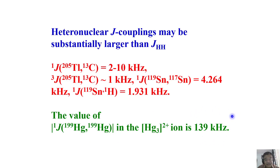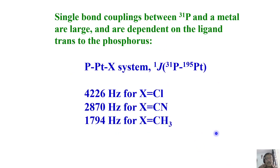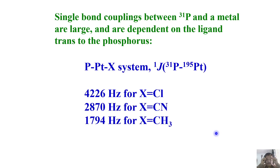For example, the mercury-199 to mercury-199 coupling in this type of ion is 139 kilohertz. Imagine — that is the J coupling I am talking about, not the chemical shift, not the spectral width. It is 139 kilohertz of J coupling. So just to give you an idea, heteronuclear coupling can be substantially larger. That is what I wanted to tell you and illustrate with a few examples.